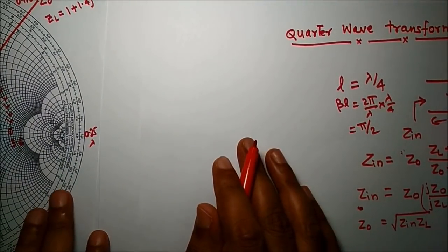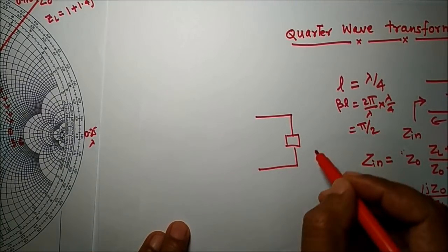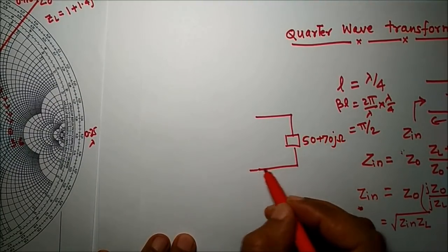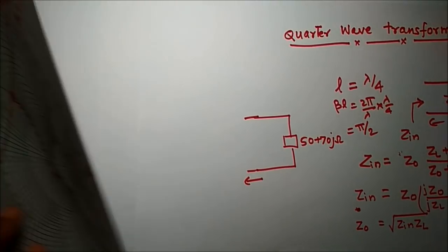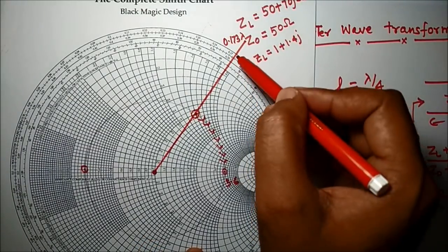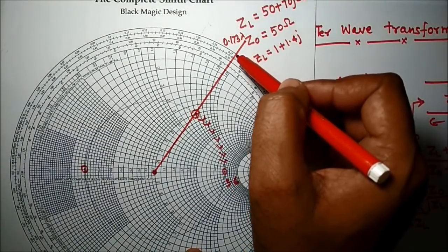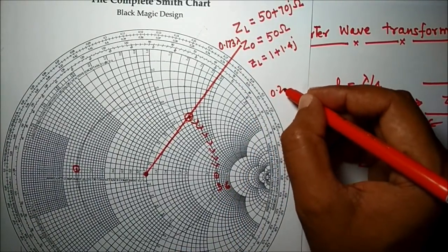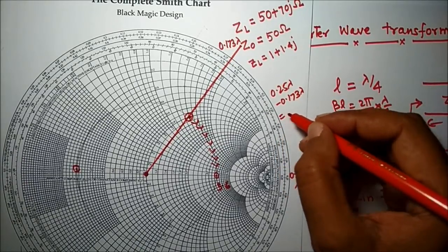So for a load of 50 + 70j ohm, we choose a length of 0.25 lambda minus 0.173 lambda to move from the load towards the generator in order to reach a purely resistive value.